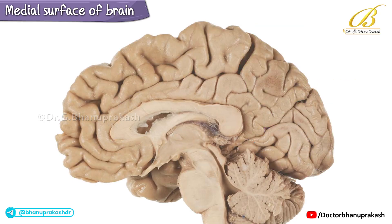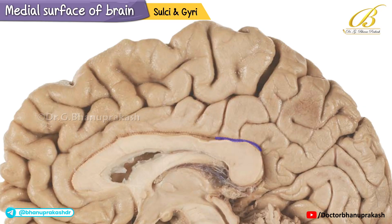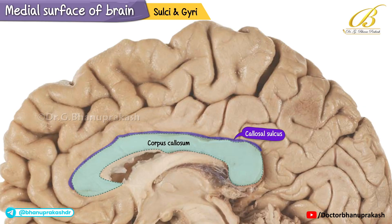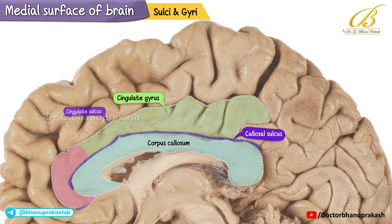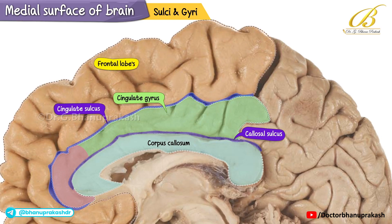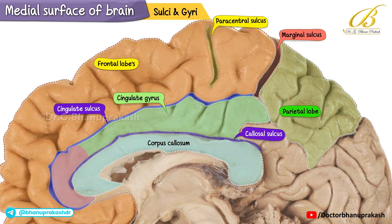As we explore the sulci and gyri of the medial surface of the cerebral hemisphere, we find the callosal sulcus along the margins of the corpus callosum. Above it, we have the cingulate gyrus, an arch-shaped convolution. Its frontal portion is known as the anterior cingulate gyrus, or cortex. The cingulate sulcus separates the frontal and parietal lobes from the cingulate gyrus and terminates as the marginal sulcus. It sends a branch, the paracentral sulcus, to separate the paracentral lobule from the frontal gyri.